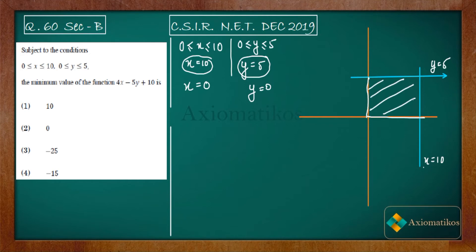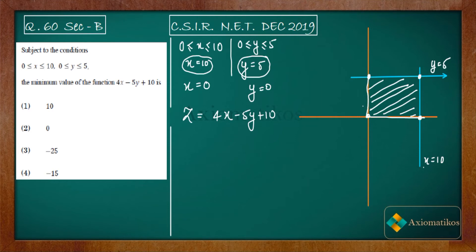The feasible region is established. We know that if we have an objective function which we have to minimize, then from the theorem in linear programming, the minimum value lies on the corner points of the feasible region. So we have four corner points.